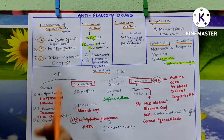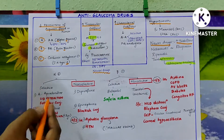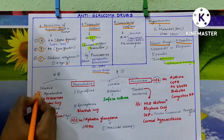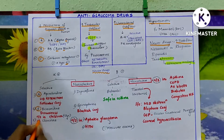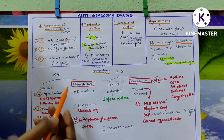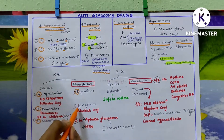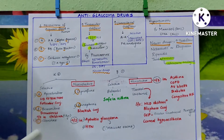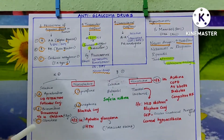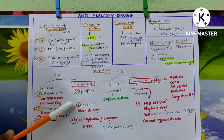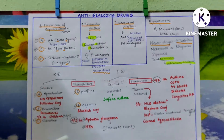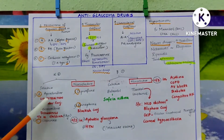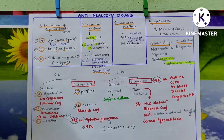Alpha agonists are classified into selective and non-selective. In selective, you have A, B, C: apraclonidine, brimonidine, and clonidine. In non-selective, you have D and E: dipivefrine and epinephrine. Items written in red color indicate side effects or contraindications of these drugs.